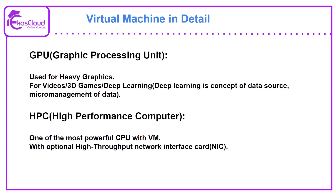GPU, or graphics processing unit, is used for heavy graphics — videos, 3D games, deep learning, or any other 3D applications required by the company. HPC, high performance computing, is one of the most powerful CPU options available and includes an option to use a high throughput NIC card if needed.